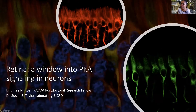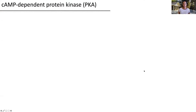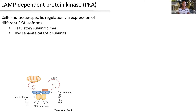Today we're going to be presenting some of the data looking at PKA in human retina, using the retina as a window into PKA signaling in neurons. PKA has cell and tissue specific regulation via expression of different PKA isoforms. It is comprised of a regulatory subunit dimer and two separate catalytic subunits. There are four isoforms for the regulatory subunits: R1-alpha, R1-beta, R2-alpha, and R2-beta. For the catalytic subunits, there are three isoforms: C-alpha, C-beta, and C-gamma.